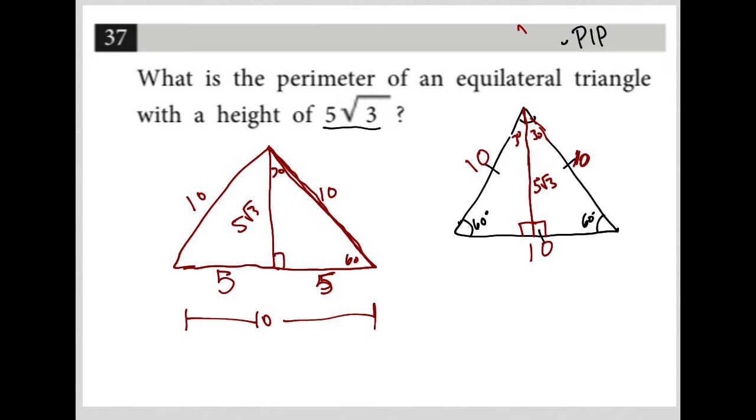So the perimeter is just the sum of all three sides, and that answer will be 30.